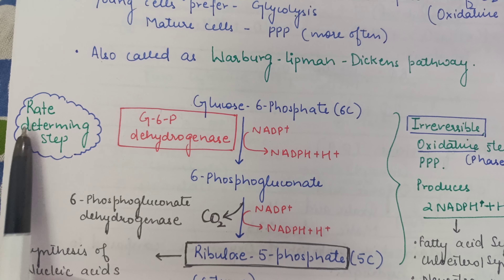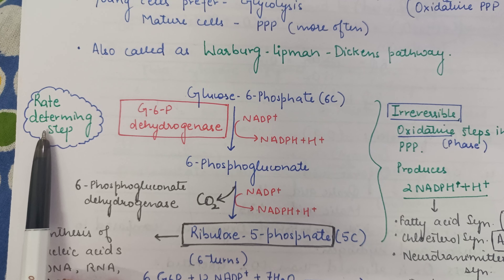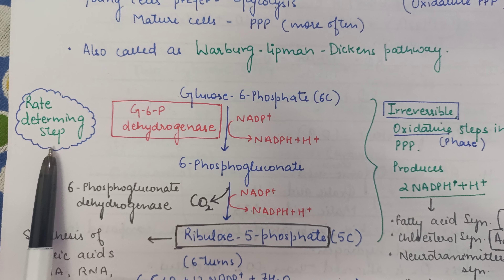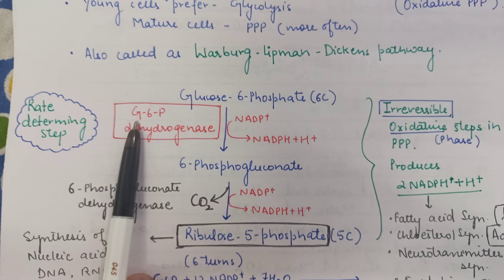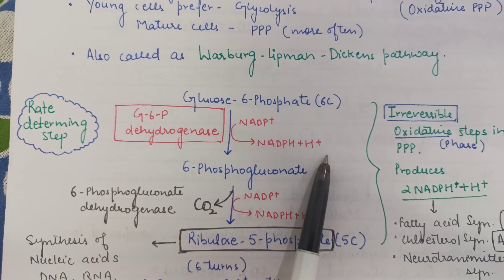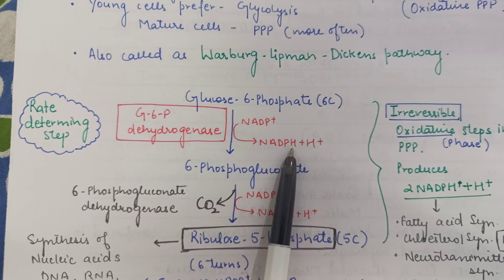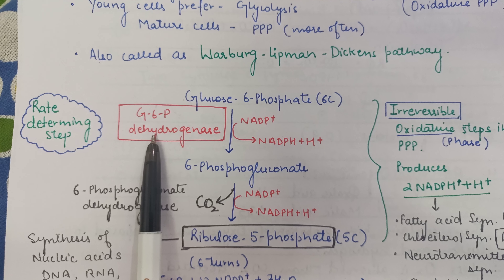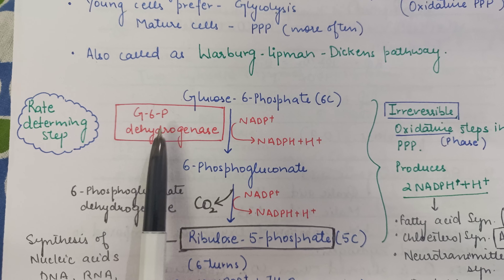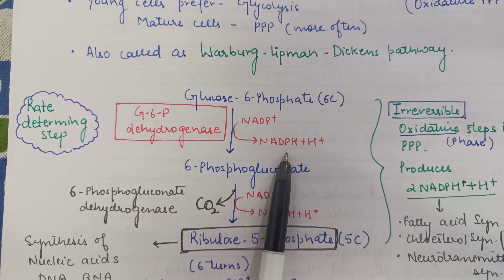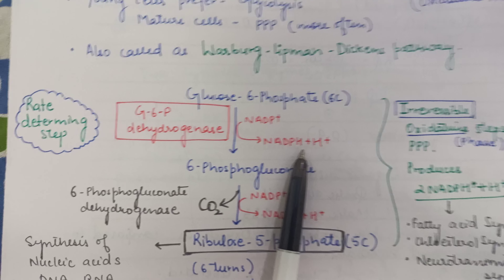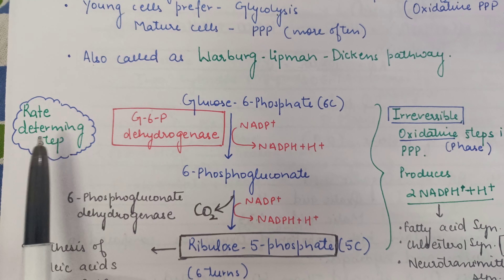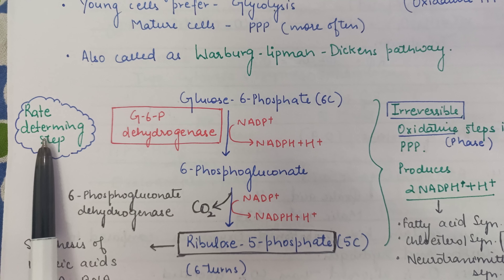This very first step is the rate-determining step. The reason is that glucose-6-phosphate dehydrogenase is inhibited when NADPH concentration increases. So NADPH regulates this step — when NADPH levels are high, the enzyme is inhibited and the pathway slows down. That is why it is the rate-determining step.